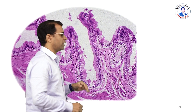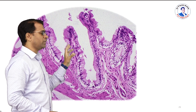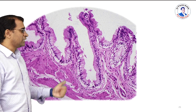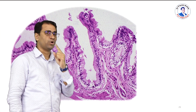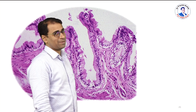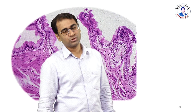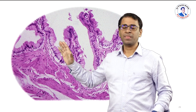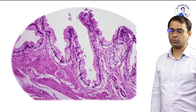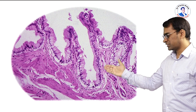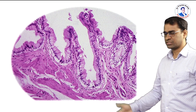The gallbladder has a unique histology because it is one of those GIT structures that does not have a submucosal area. So it definitely has a mucosa, and straight away, without a submucosa, it has a muscle layer and then a serosal layer.